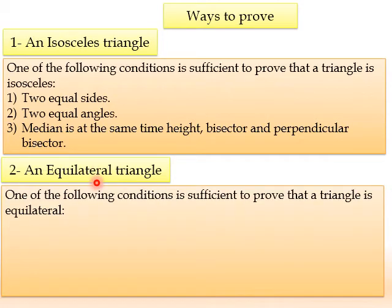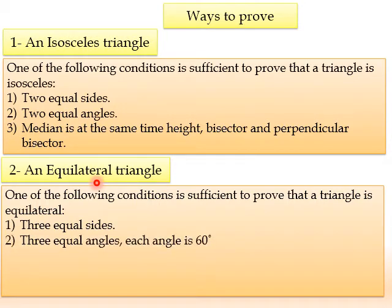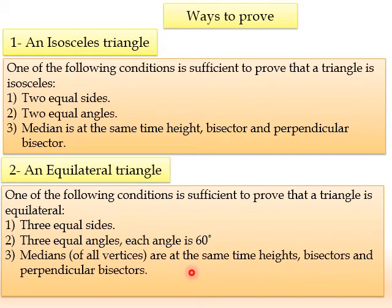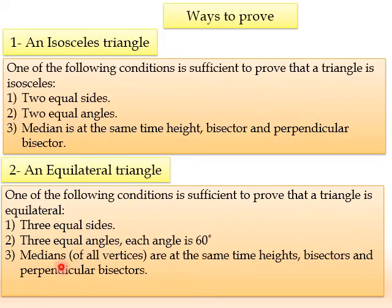An equilateral triangle is a triangle that has three equal sides and three equal angles, each one equal to 60 degrees. In an isosceles triangle, the median issued from the main vertex is at the same time a height, bisector, and perpendicular bisector. But in an equilateral triangle, a median issued from any vertex is at the same time a height, bisector, and perpendicular bisector.